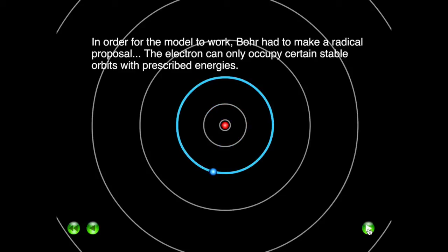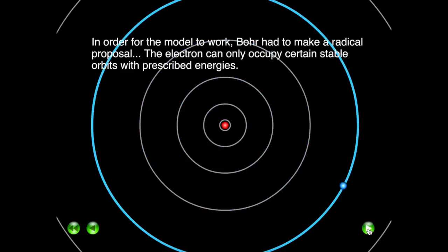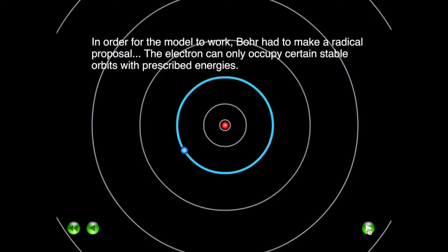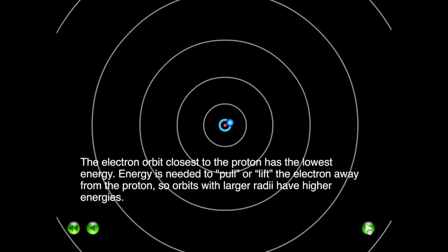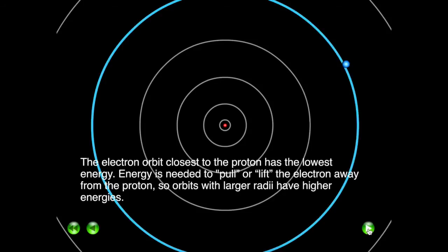As you can see in this model here, every time the electron absorbs energy, it goes up to a higher energy level. If it keeps absorbing energies, it will end up leaving the orbits.